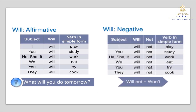Now it's time to look at the negative form using 'will'. Like the affirmative form, the grammar structure of the negative is very simple too. We have subject, plus 'will', plus 'not', plus verb in simple form. Read these sentences with me: I will not play. You will not study. He, she, it will not work. We will not eat. You will not try. They will not cook.